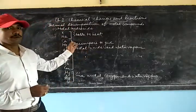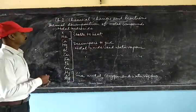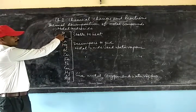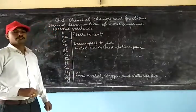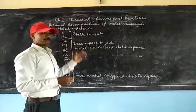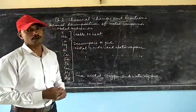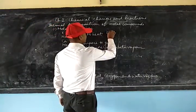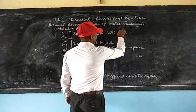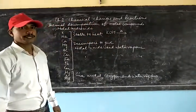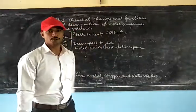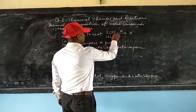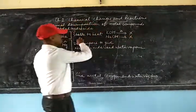As you go down the reactivity series, the reactivity of the metals decreases. Now, what happens to metal hydroxides when heated? The hydroxides of sodium and potassium are stable to heat — that is, they are not going to decompose at all. If we heat potassium hydroxide, it does not decompose. So there is no decomposition for KOH or NaOH; that is why they are called stable to heat.